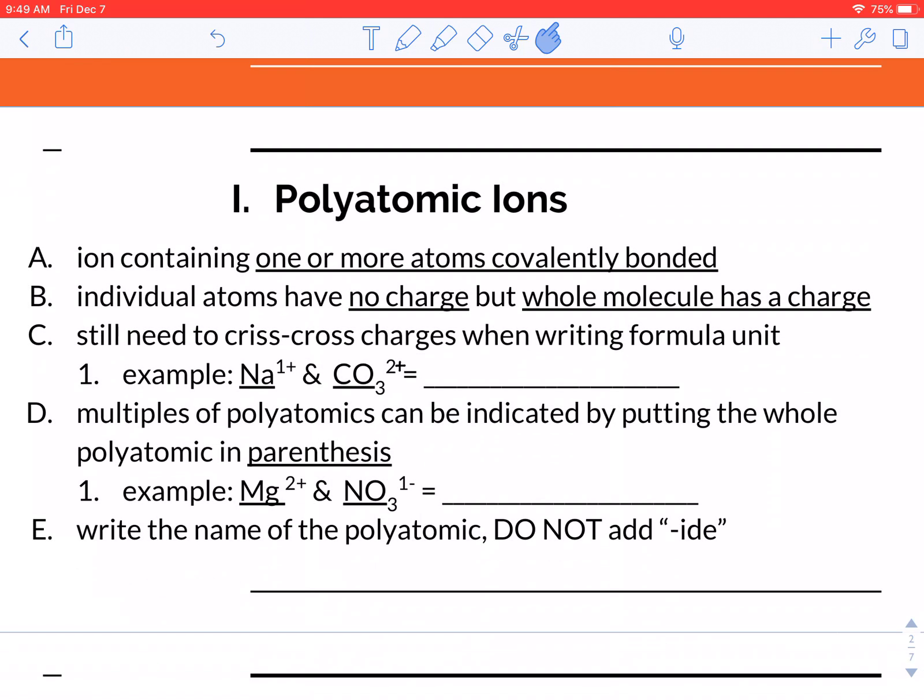Essentially, these atoms are going to be covalently bonded, so the individual atoms don't have a charge because they're sharing electrons, but the whole molecule that gets produced does have a charge. When you write the chemical formula, you're still going to crisscross the charges just like what we did with our regular ionic bonds.